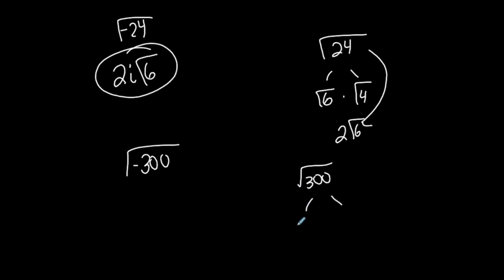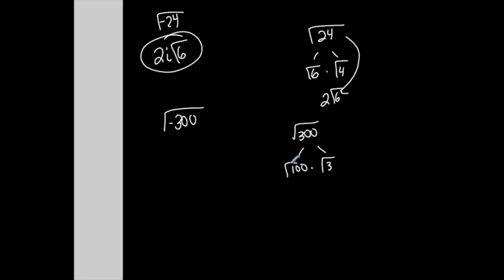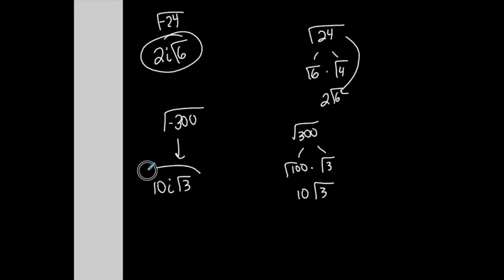Let's do the square root of negative 300. 300 can be represented as the square root of 100 times the square root of 3. I chose these factors because the square root of 100 simplifies to 10 — 100 is a perfect square — and the square root of 3 cannot be simplified, so it stays. So the square root of 300 is 10 times the square root of 3. For the square root of negative 300, that negative comes out and becomes an i, giving us 10i times the square root of 3. This is a complex number.